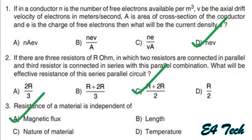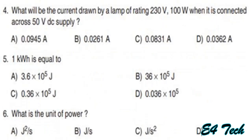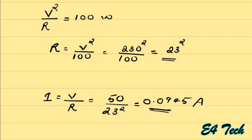Next question: what will be the current drawn by a lamp of 230 volt 100 watt when it is connected across a 50 volt DC supply? The lamp rating is 230 volt, 100 watt, but we have a 50 volt supply. We need to find the resistance of the lamp.